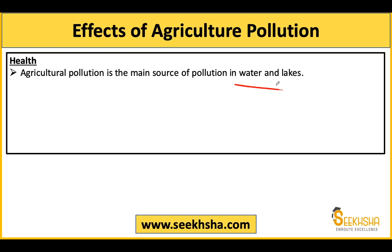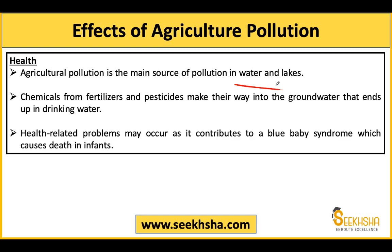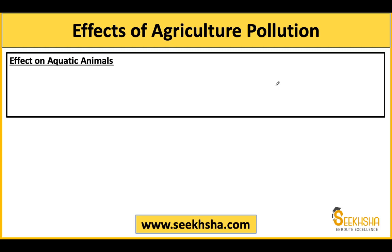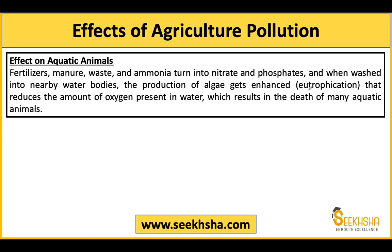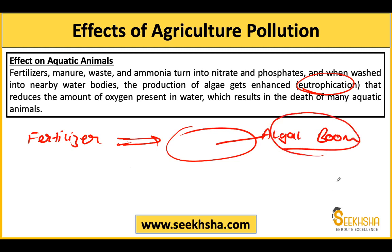Water and lake pollution: chemical fertilizers and pesticides make their way into groundwater, rivers, and lakes, causing problems like blue baby syndrome and death of aquatic animals. There is a concept of eutrophication: fertilizer runoff enters a water body, and the nutrients cause an algal bloom — algae population booms rapidly.